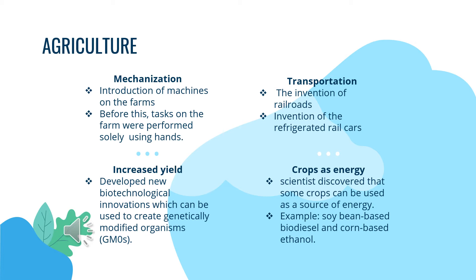Using crop as energy also has a positive impact in this area. Farmers had always produced crops as food and fibre, but in recent times, scientists discovered that some crops can be used as a source of energy. For example, soybean-based biodiesel and corn-based ethanol were developed as a renewable alternative to petroleum-based energy.